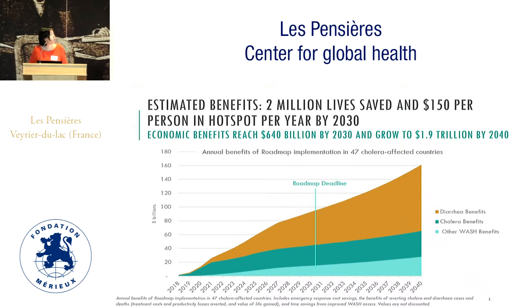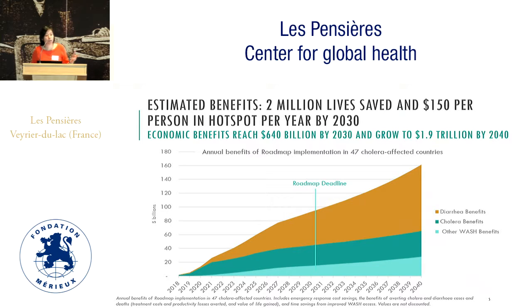This next slide shows the overall benefits. We estimated that we're going to be saving 2 million lives due to cholera and diarrhea by 2030. The graph shows economic benefits split out between diarrhea, cholera, and other WASH benefits. The key thing to note is that 75% of the economic benefits are driven by lives saved. We did model a few other economic benefits like productive time gained and time to access drinking water, but the main benefit is lives saved.